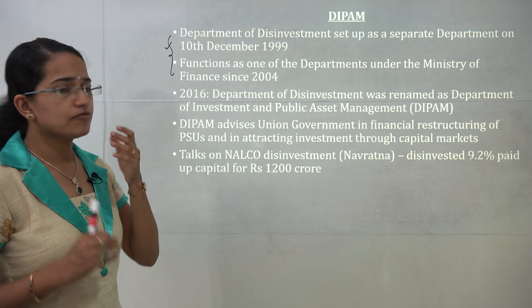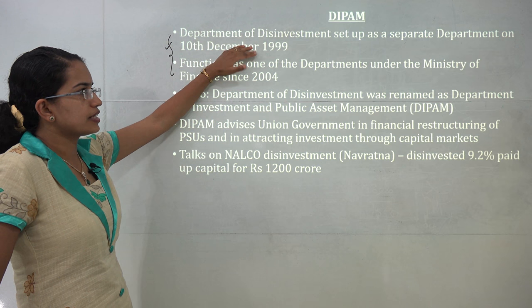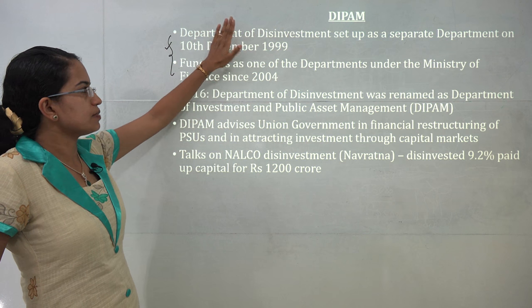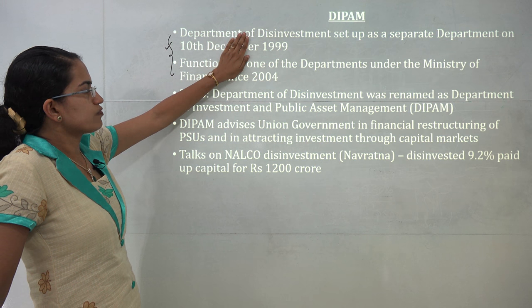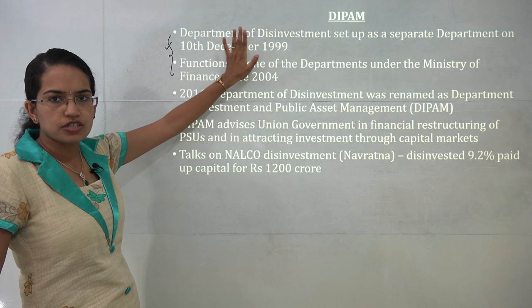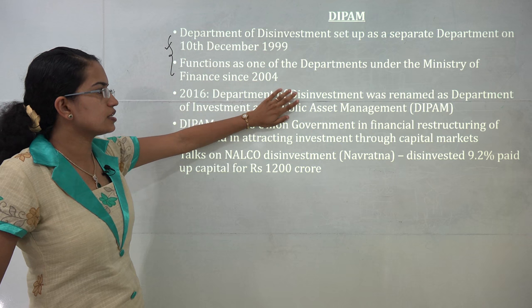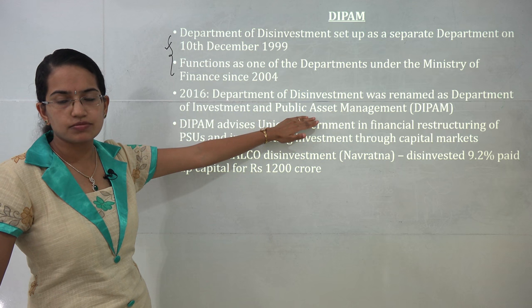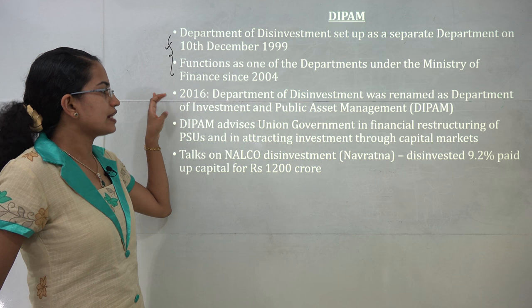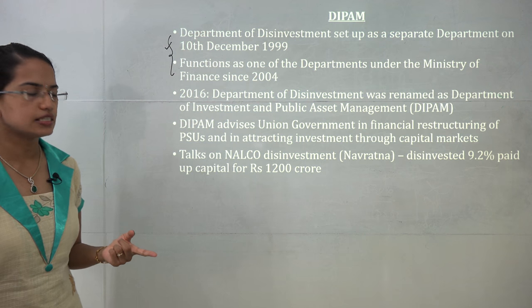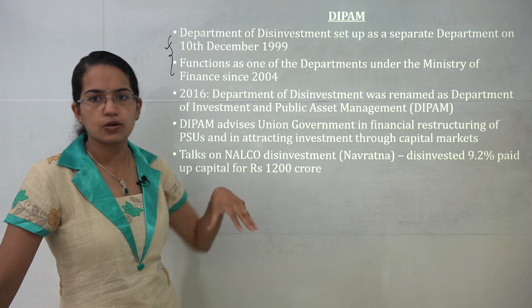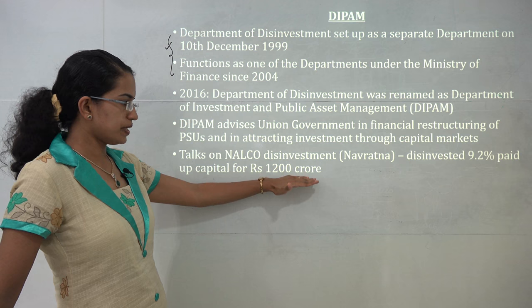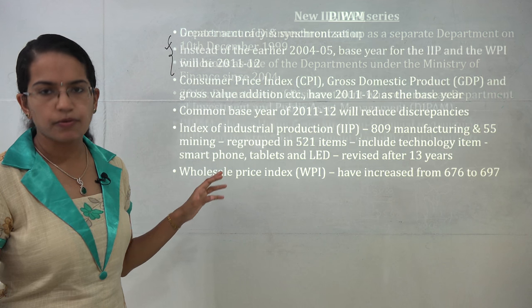DIPAM is very important. The Department of Disinvestment was set up as a separate department in 1999, then handed over to the Ministry of Finance in 2004, and finally dissolved. In 2016, a new department known as DIPAM — the Department of Investment and Public Assets Management — came into play, which advises the union government on financial restructuring. Recently it was in news due to NALCO disinvestment, where 10% of NALCO shares were disinvested for 1200 crore rupees.